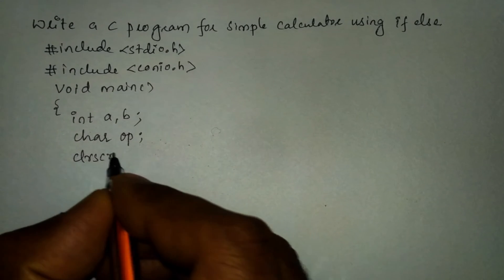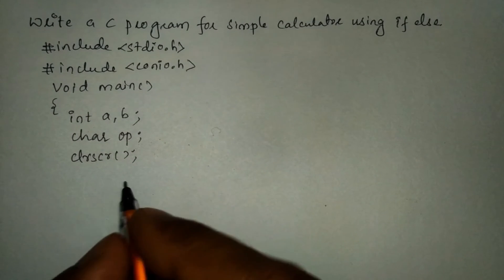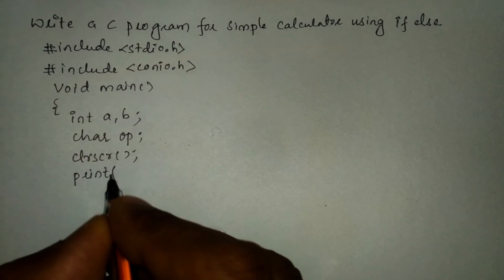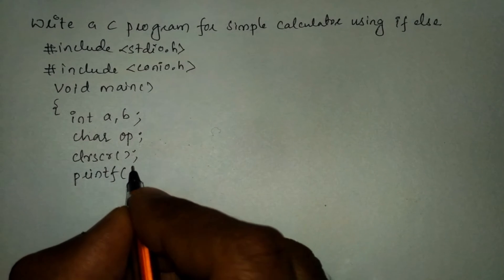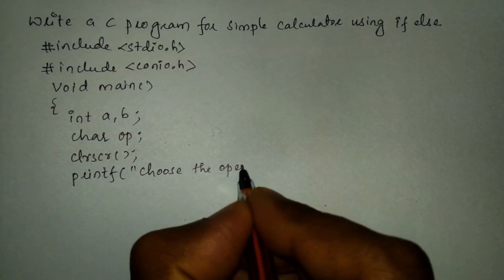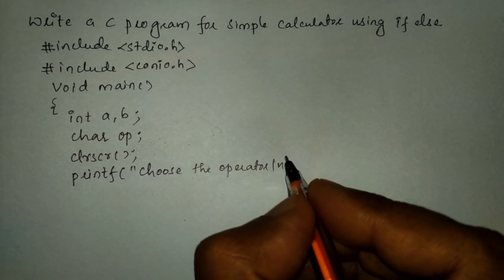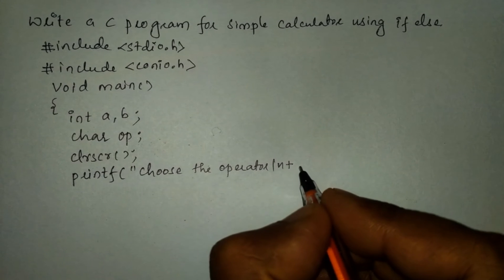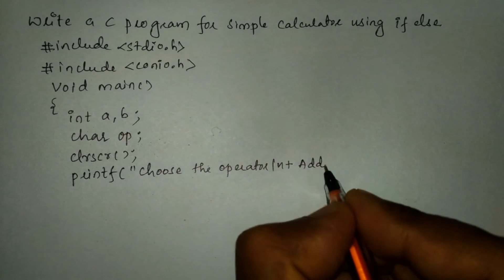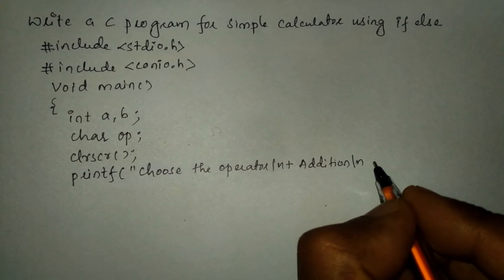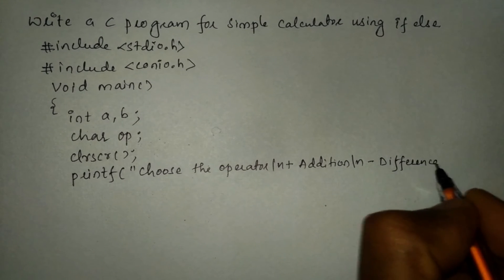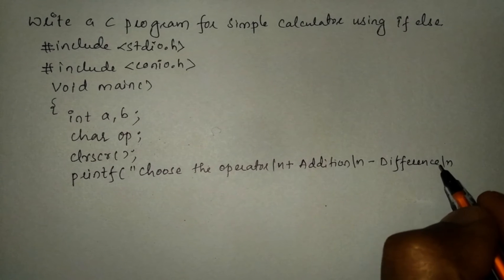Let us write the clrscr() function, which is used to clear the screen. Next we are going to provide the menu to the end user in a printf statement. In double quotation marks I am going to write 'choose the operator' followed by backslash n, then plus for addition followed by backslash n, then minus for difference followed by backslash n.